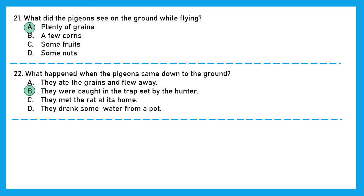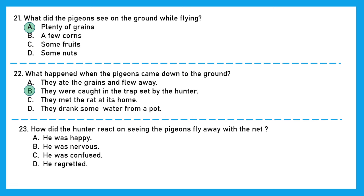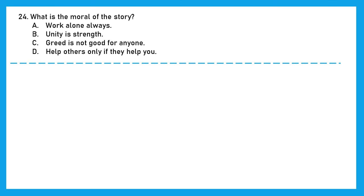Question 23. How did the hunter react on seeing the pigeons fly away with the net? He was happy? No. He was nervous? No. He was confused? No. He regretted it. Option D is the right answer. Question 24. What is the moral of the story? Work alone always? No. Unity is strength, and that is the moral of the story. Pigeons worked in unison and they were able to come out of the bad situation. Option B is the right answer.